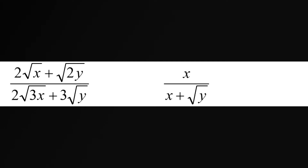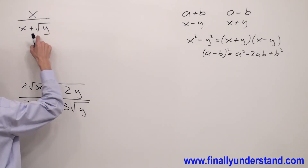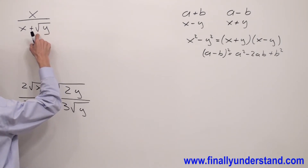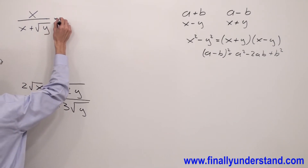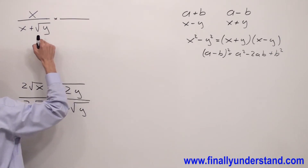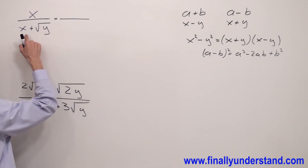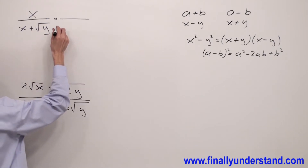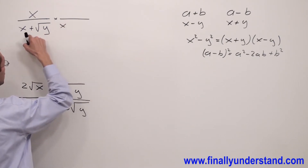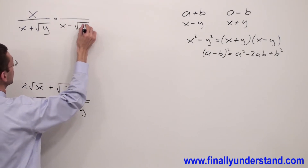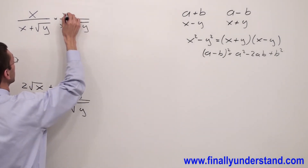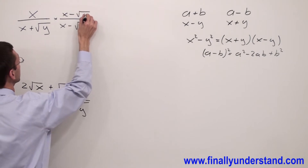This time we have square root of y in the denominator. Anytime we want to eliminate the square root from the denominator, we have to multiply the numerator and denominator by the conjugate of the denominator. In this case, the conjugate of the denominator is going to be x minus square root of y.